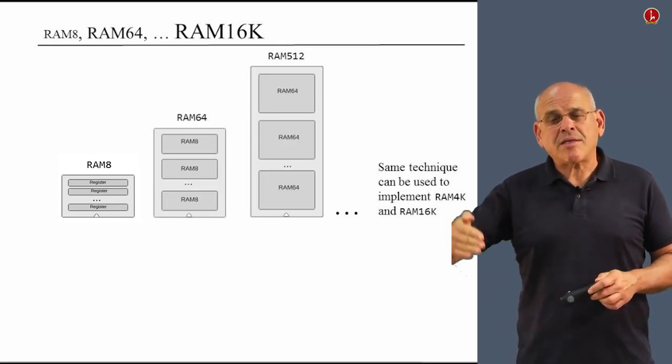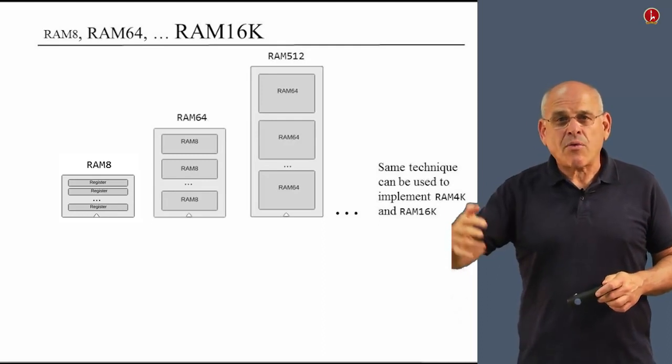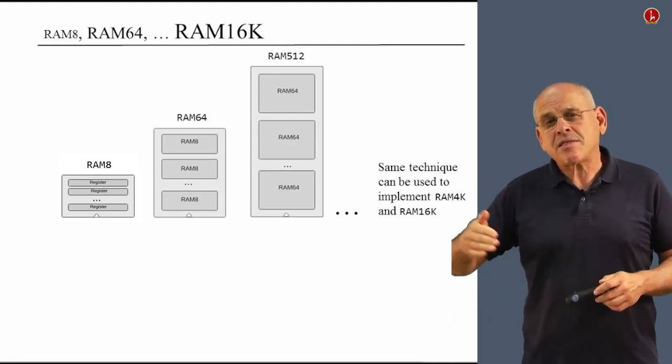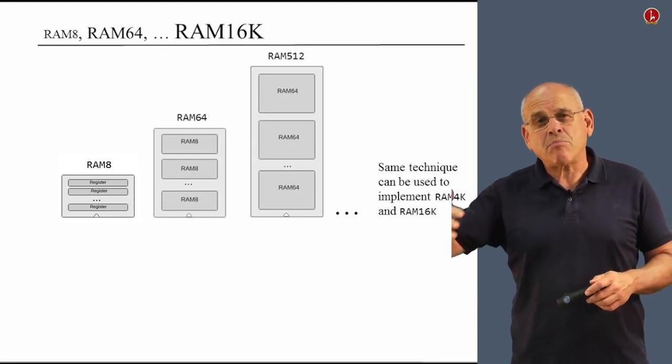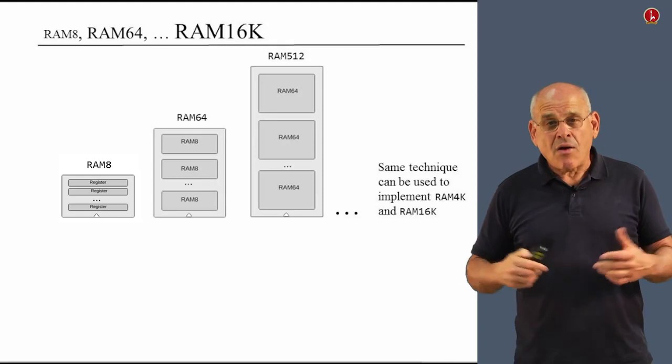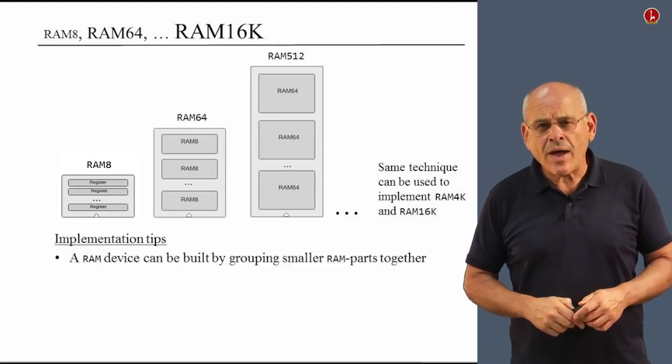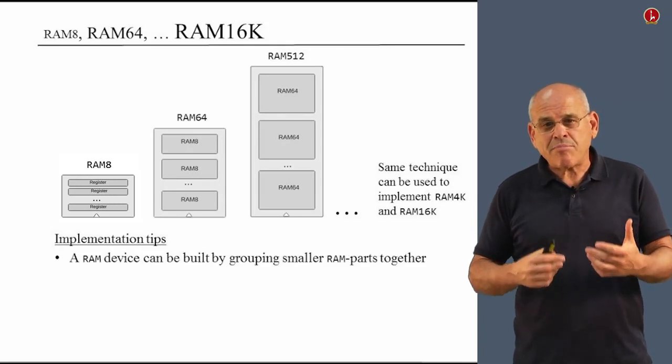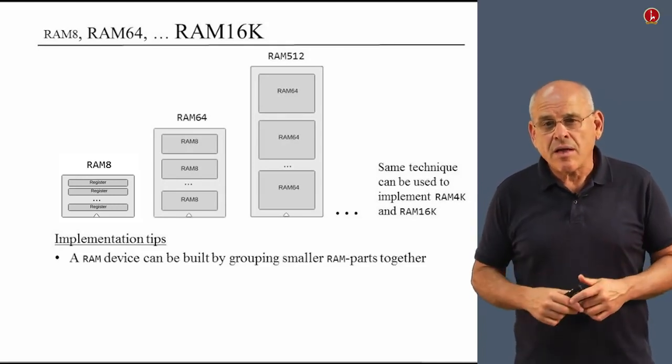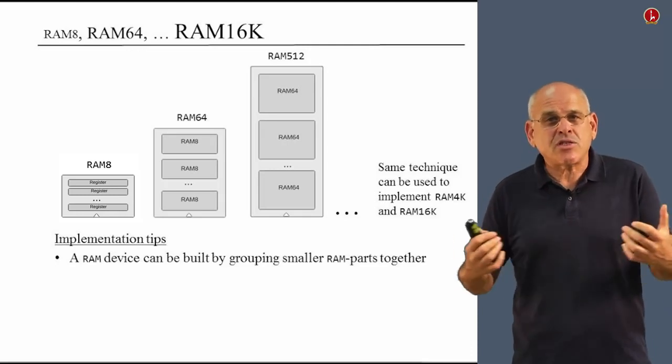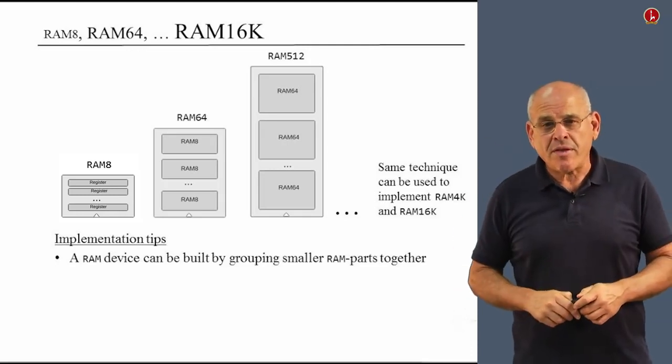So we basically repeat the same recursive ascent, if you will. And by using this strategy, we can build more and more elaborate RAM chips. Well, first of all, we note that a RAM device can be built by grouping together smaller RAM parts, which is an HDL description of what I did before in this diagram.